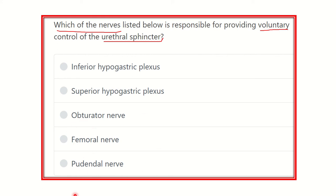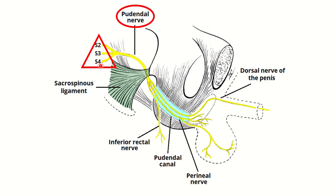Among the remaining options — obturator nerve, femoral nerve, and pudendal nerve — the pudendal nerve arises from sacral 2, sacral 3, and sacral 4 spinal nerve roots. This nerve courses around the sacrotuberous and sacrospinous ligaments and enters the pudendal canal. It first gives a branch — the inferior rectal nerve — then another branch, the perineal nerve, and finally the dorsal nerve of the penis.